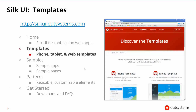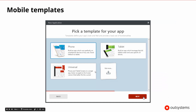We've mentioned that there is the silkui.outsystems.com website, and the templates and themes are available at the main link at the top. We can get to the phone template and the tablet template, download those, and be able to use them inside of our OutSystems server.